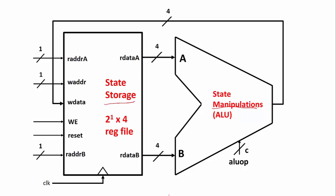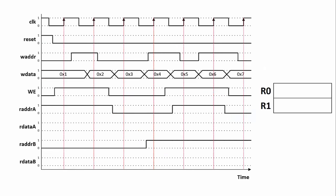We're going to look at a very simple register file that has a total of two registers, R0 and R1, as indicated by the address bits. It's going to have four bits stored in each register, as indicated by the data lines. Imagine we have a data system here and a timing diagram that we're going to fill in.